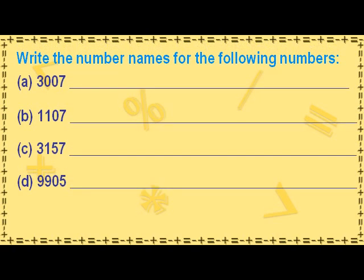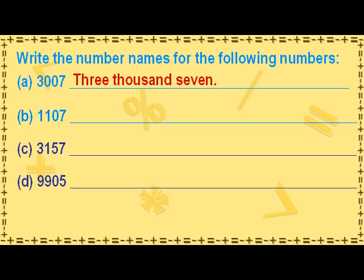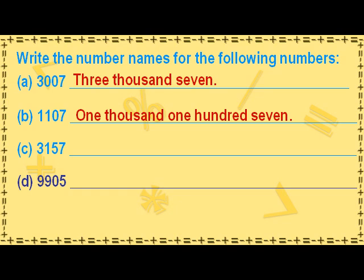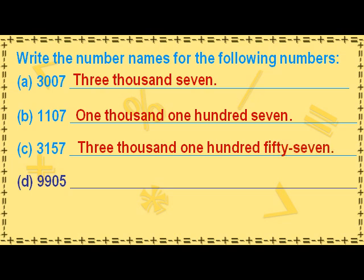Write the number names for the following numbers. The number name for 3007 is three thousand and seven. The number name for 1107 is one thousand one hundred and seven. The number name for 3157 is three thousand one hundred and fifty-seven. The number name for 9905 is nine thousand nine hundred and five.